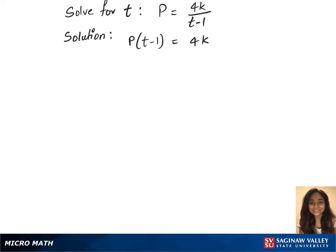In our next step, we will distribute p on the left, which gives us pt minus p equals to 4k on the right. Now, let's add p on both the sides, which gives us pt on the left equals to 4k plus p on the right.